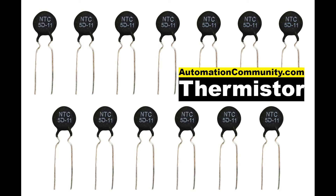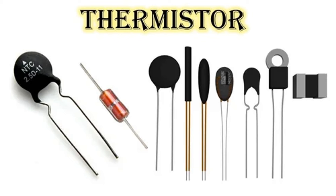Regarding typical PTC behavior: at room temperature or below the threshold, the PTC thermistor acts like a regular resistor with low resistance. As the temperature rises and approaches the threshold, the resistance starts to increase slowly. Once the threshold temperature is exceeded, the resistance increases rapidly — this is often used to limit current or trigger protective mechanisms. In overcurrent protection applications, when an overcurrent condition occurs, the temperature of the thermistor rises, causing its resistance to increase and thereby reducing the current flow to a safe level.